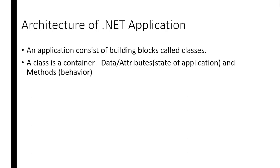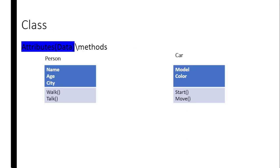Next, we are going to look at the architecture of a .NET application. An application consists of building block code classes. A class is a container that has data — that is, attributes — and methods, which are functions. The attributes represent the state of the application, and methods are the behavior. For example, we can have a class of a person. A person has a name, age, and city — those are the data or attributes.